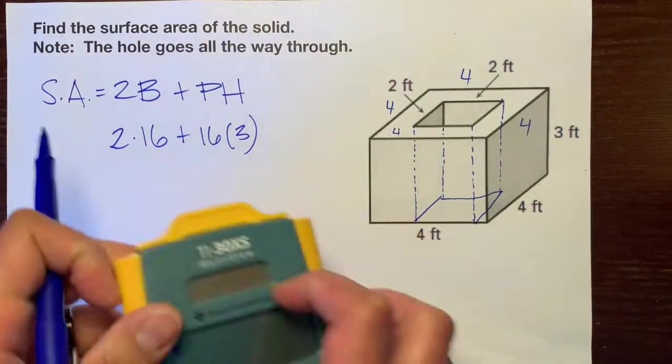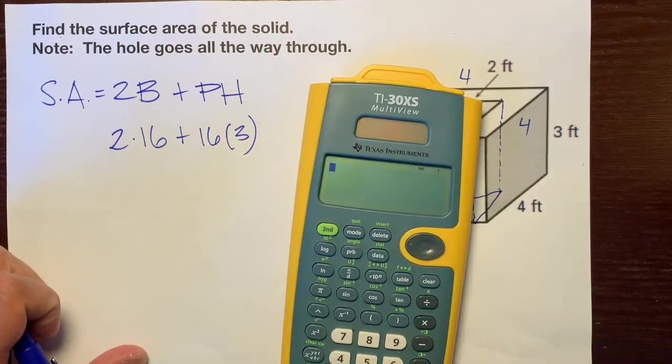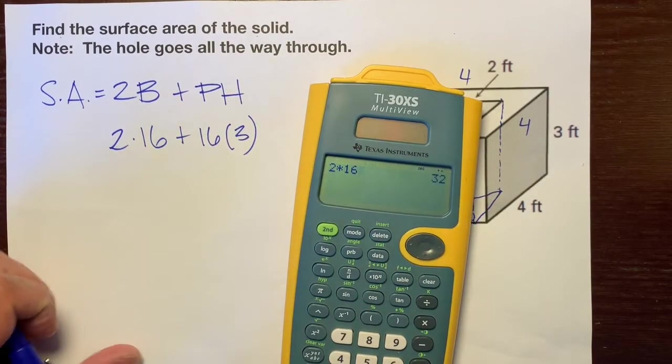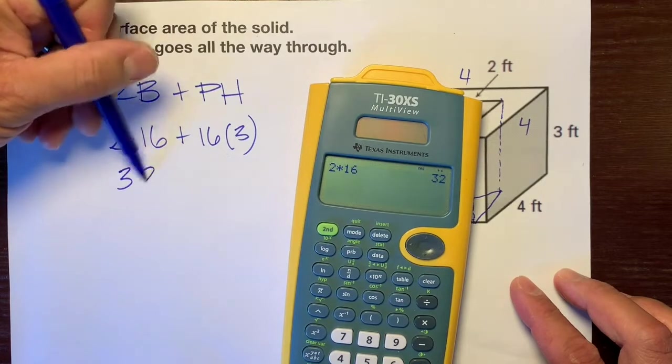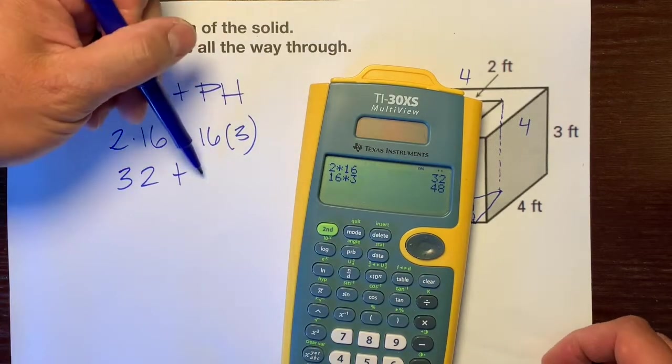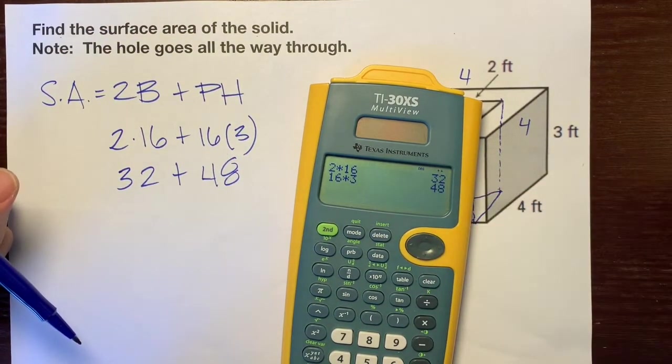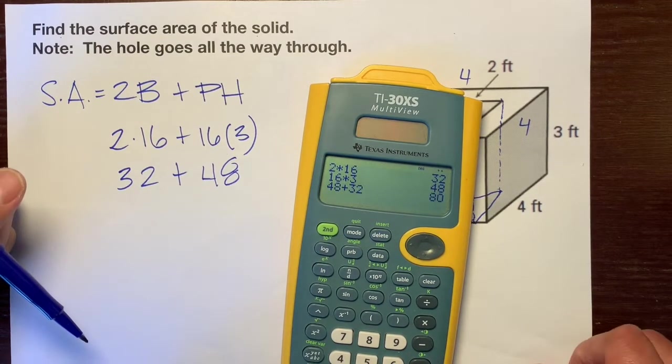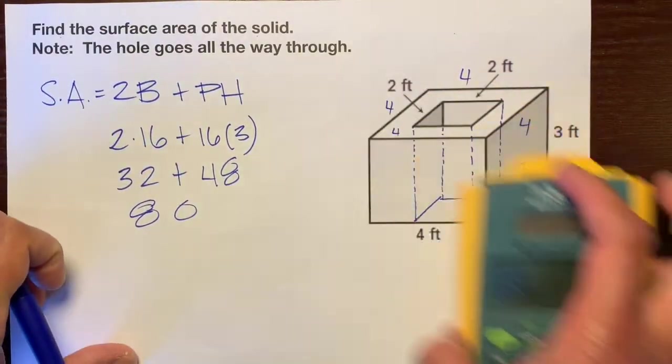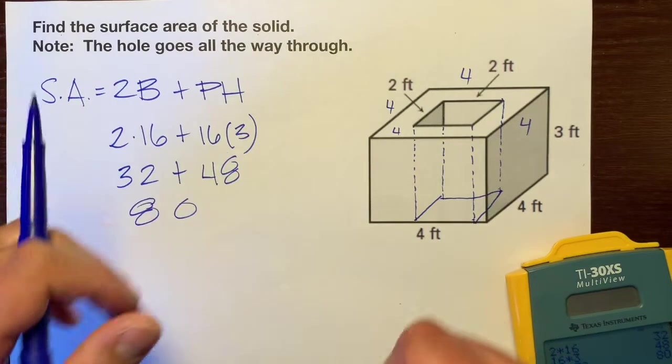Let's use our calculator, making sure we type in the correct things. Two times 16 is 32, plus 16 times three is 48. We'll add these two: 48 plus 32 is 80. So the surface area of this outer prism is 80.